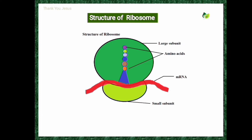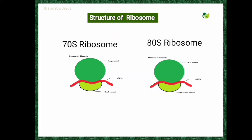Based on the sedimentation coefficient, ribosomes are measured in Svedberg units. During the ultracentrifugation process, the ribosomes are of two types depending upon the sedimentation coefficient: 70S type of ribosomes and 80S type of ribosomes. 70S type of ribosomes are found in the cytoplasm of prokaryotes.